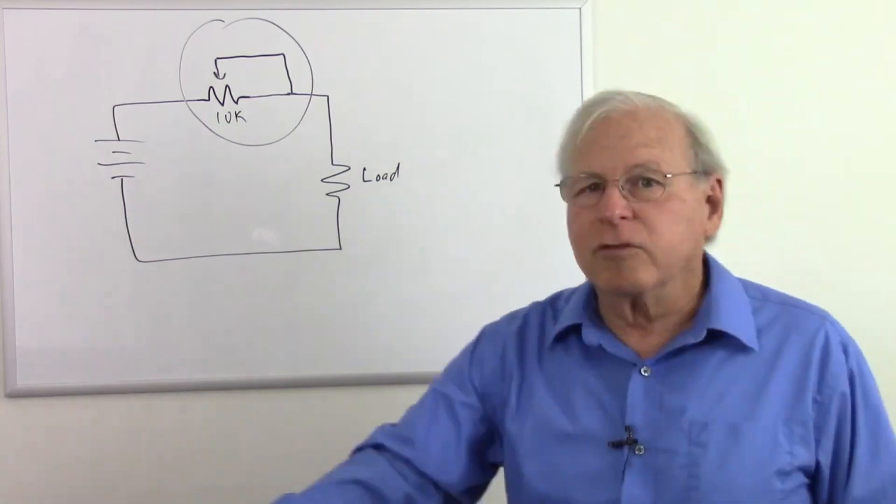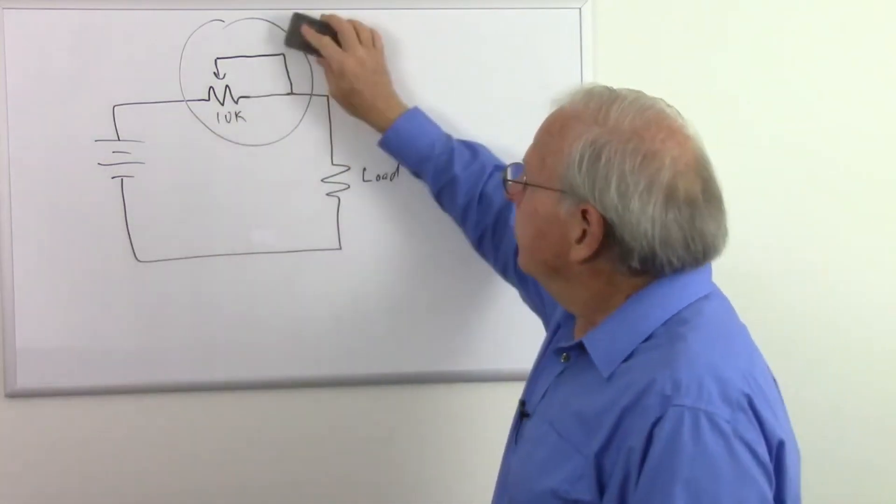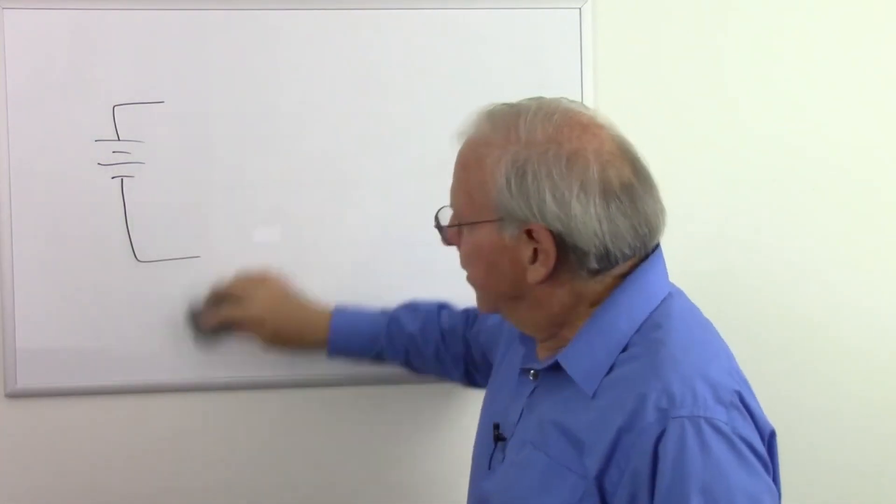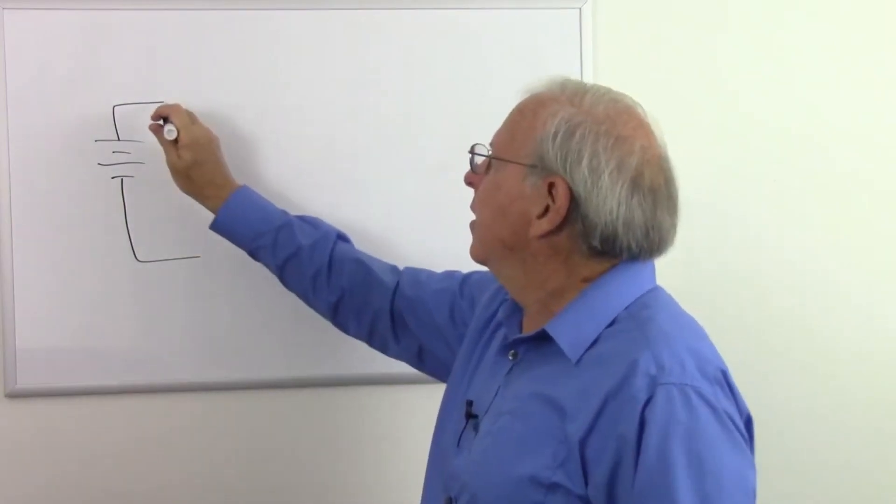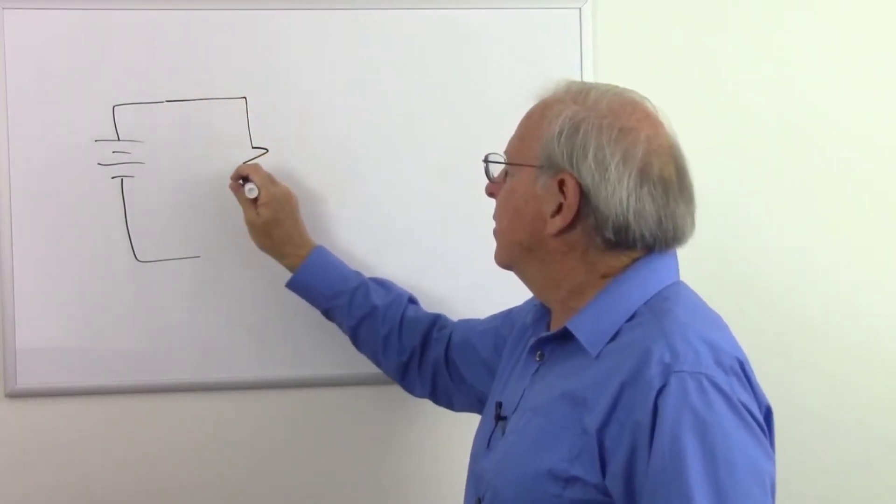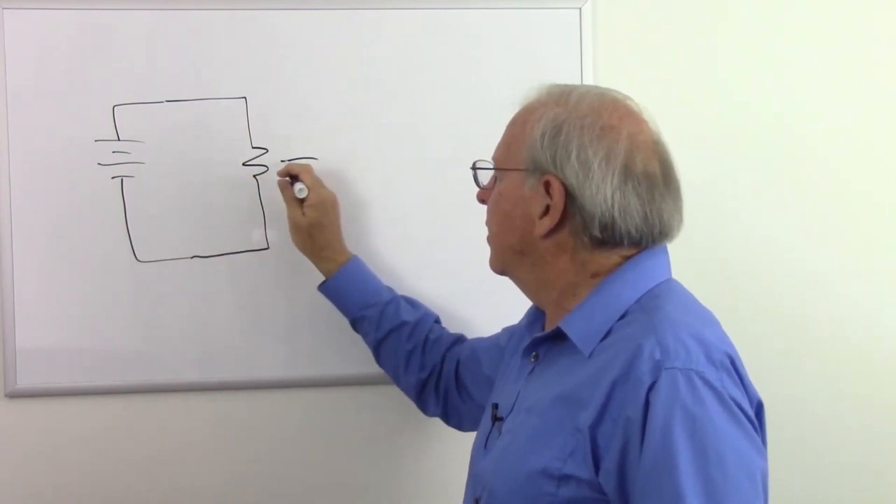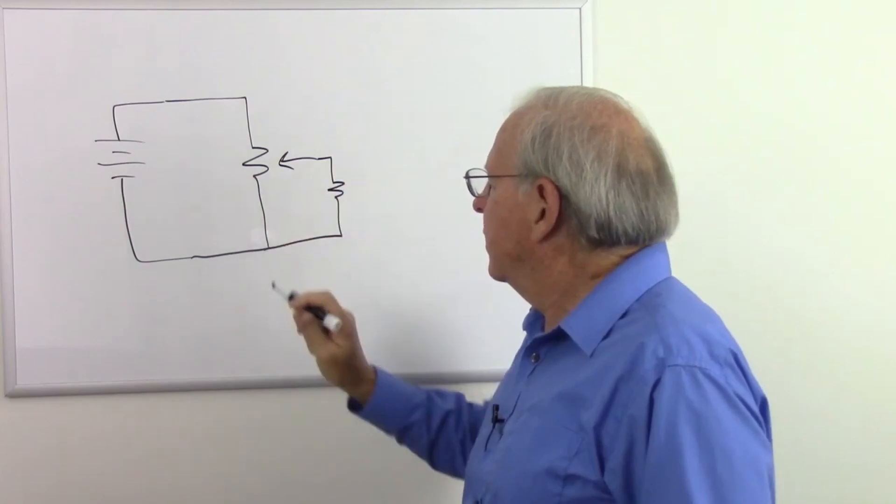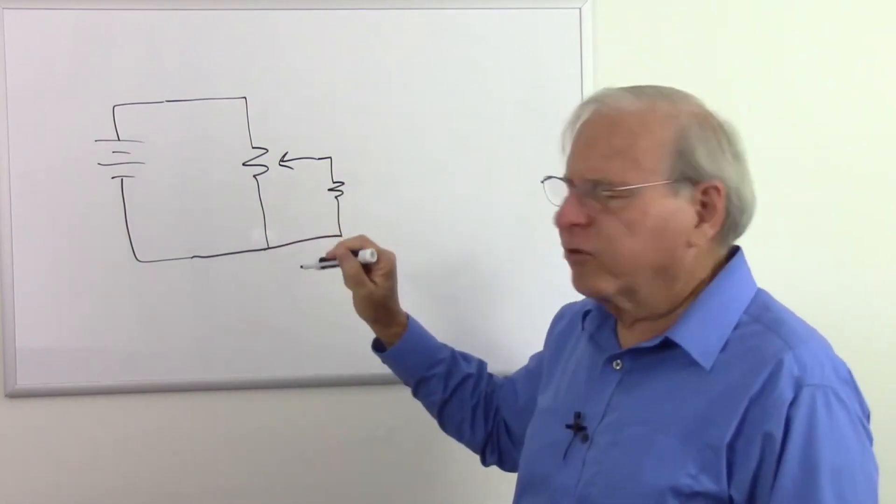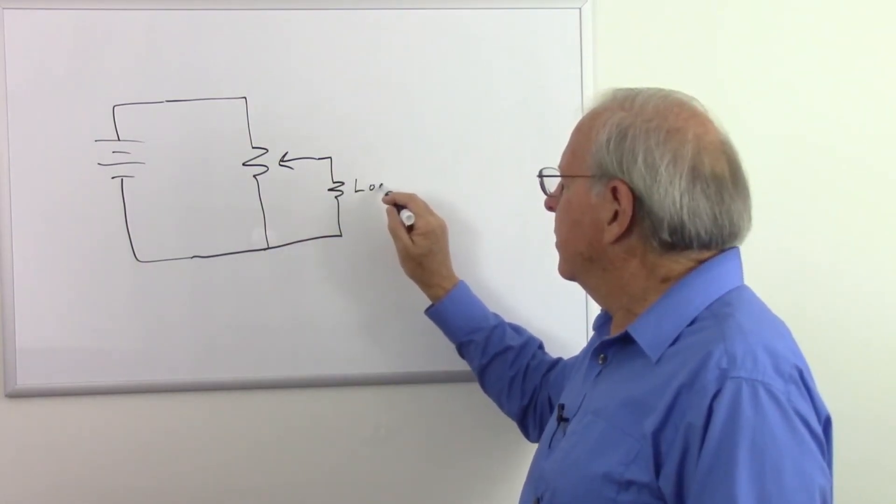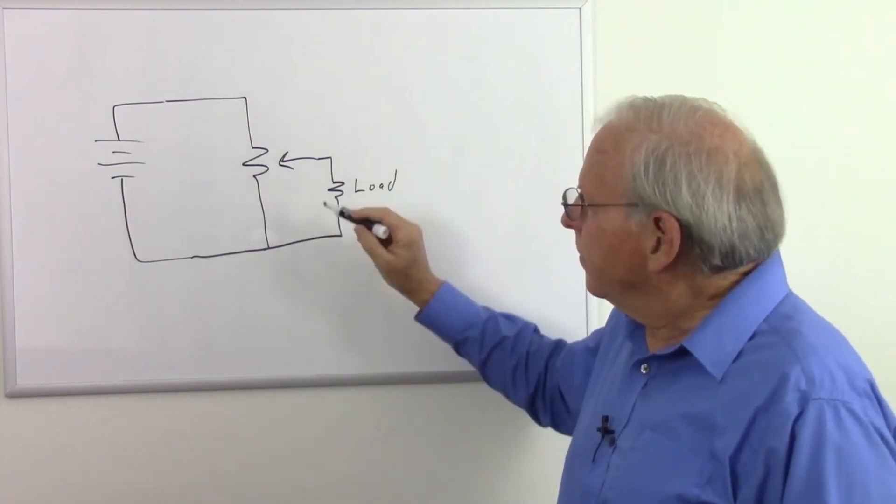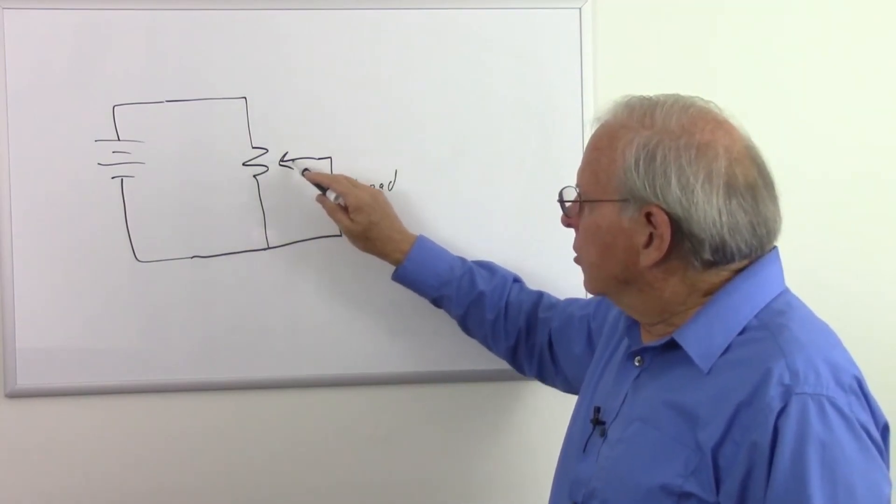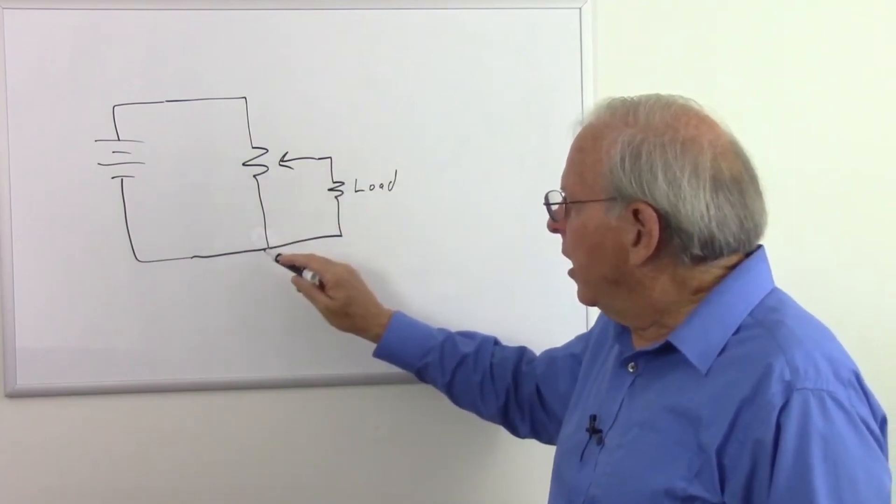But another way we can use a potentiometer would be something like this. And we'll have something like that. Now here's a load or some other circuitry over here. This is slightly different. Now the voltage goes through the load and then back over to here.